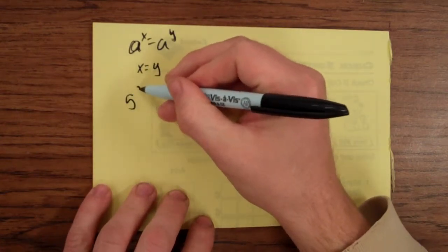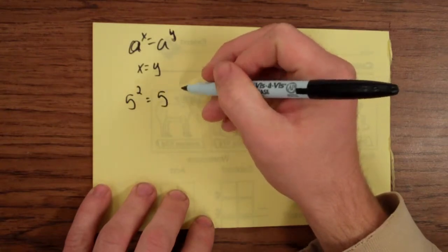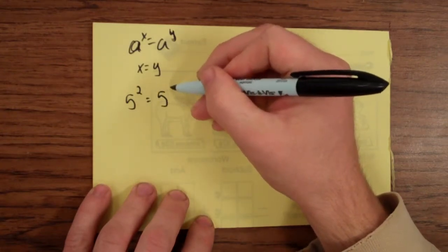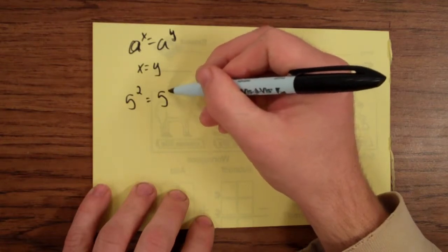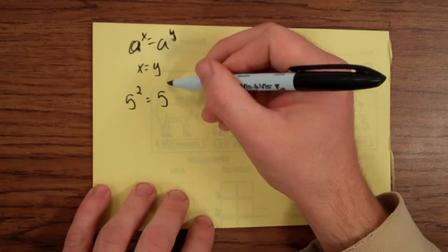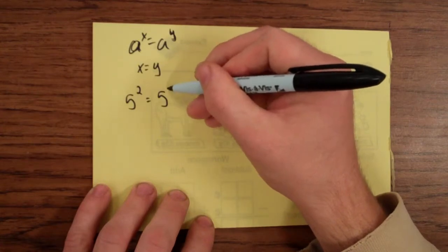Just for example, if 5 is raised to the second power and it's equal to 5, and I'm going to raise 5 to some power, I mean think about what power I would have to put here. Would anything else other than 2 make any sense? Could we put a 1? Would that make any sense? Or a 5? Or a negative 2? None of those things make sense. It would have to be a 2.